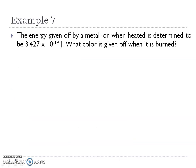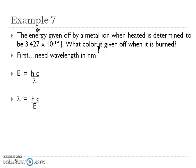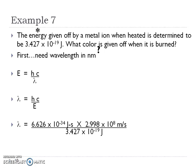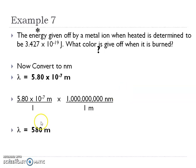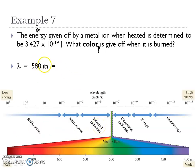Number seven: the energy given off by a metal ion when heated is determined. They're giving us energy and they want the color. The color is almost always associated with wavelength, so we need to find wavelength in nanometers to identify the color using the electromagnetic spectrum. We're going to use the energy equation and rearrange it. If you're having trouble rearranging an equation, that's a bit of algebra — come see me or check with a friend in class. Then plug and chug. Our answer is only in meters, so we convert those meters to nanometers. We get 580 nanometers. Looking at 580 nanometers on the spectrum, it's going to be in the yellow visible range.